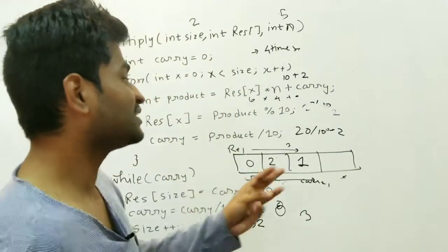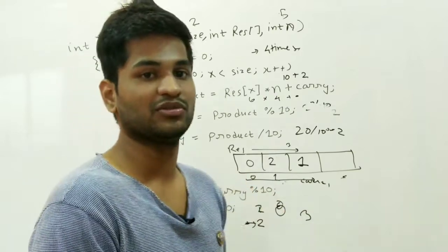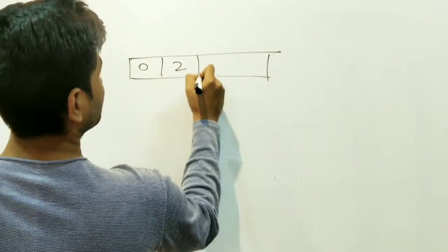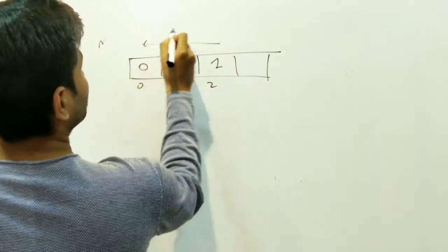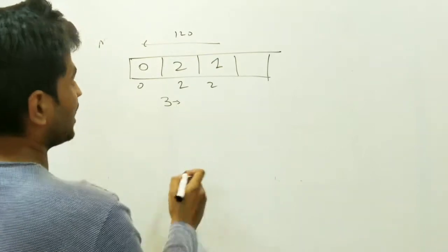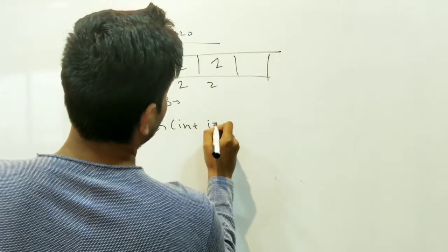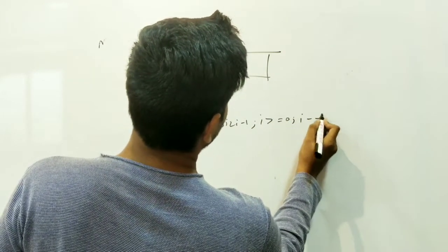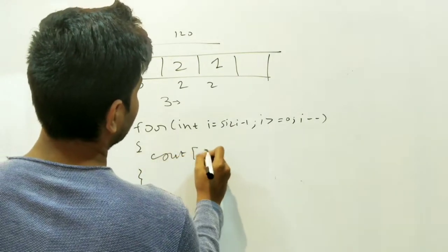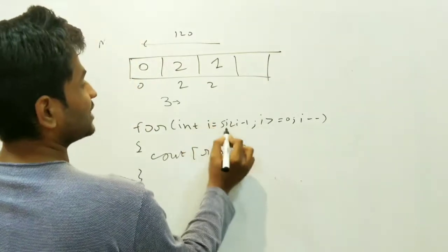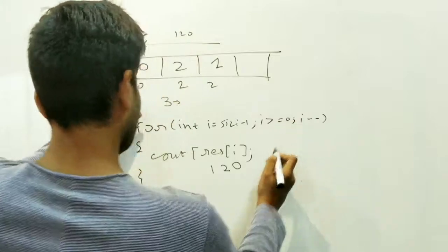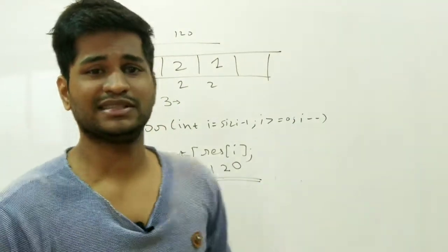Finding factorial of 5 returns size = 3, and the array is [0, 2, 1]. To print the result, we iterate from i = size - 1 = 2 down to i >= 0 in reverse, printing result[i]. So it prints result[2]=1, then result[1]=2, then result[0]=0, giving the output 120.